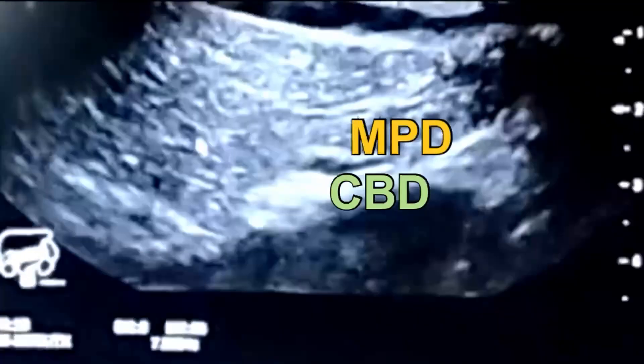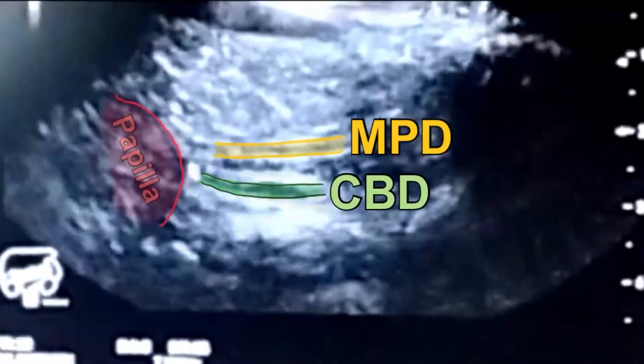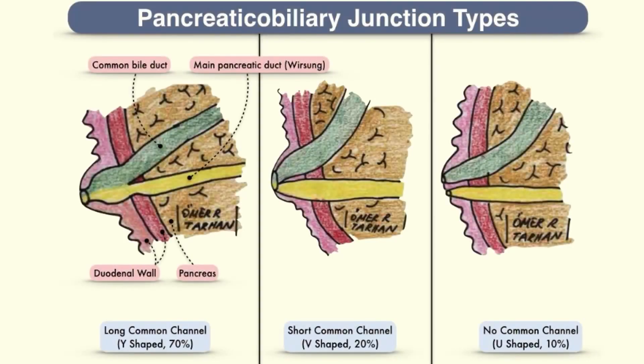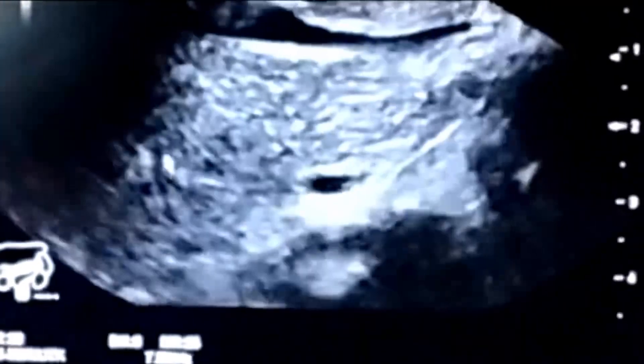Both are meeting at the major papilla, and this is the main pancreatic duct.